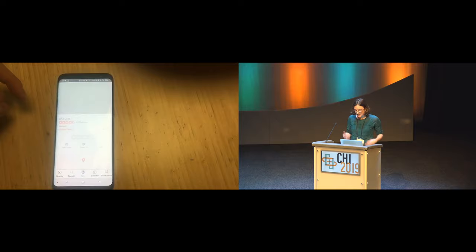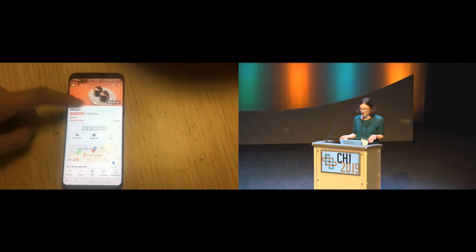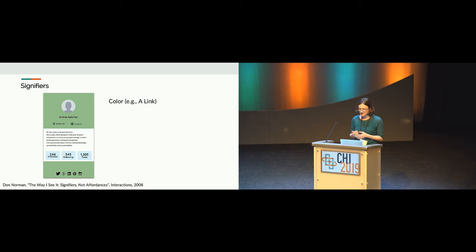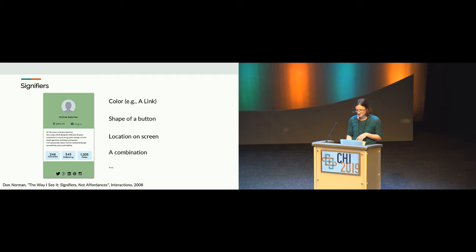Tapping is one of the most important gestures on a mobile phone, but in many apps, people sometimes can't tell which elements are tappable, and this can be a huge usability issue. Interface designers can use signifiers to let users know an element is tappable, like the blue color of a link, the shape of a button, the location of an element on the screen, or a combination of different visual properties.